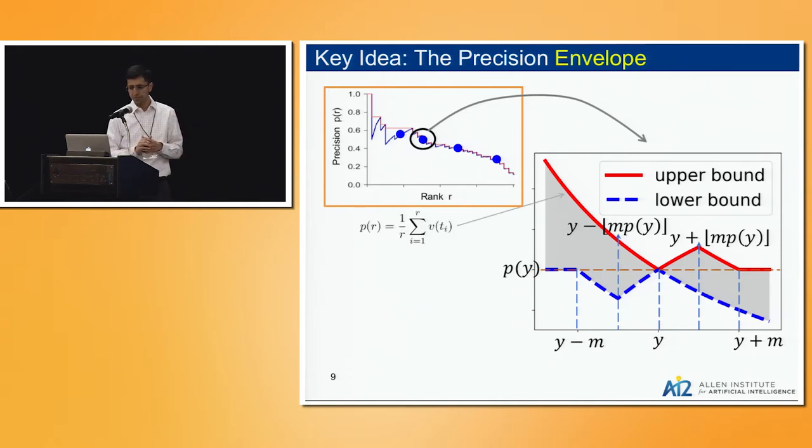We can zoom into it and turns out that if you know the exact value, you know a lot about the precision function everywhere to the right and everywhere to the left. If you recall the definition of precision, it's an average of a growing list of zeros and ones. Since it's a large average, if you have some value at precision at rank y, if you add a few zeros or ones, things can't change too much just because it's an average of very large numbers.